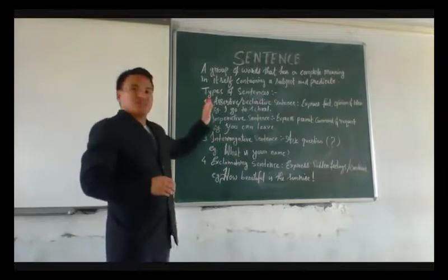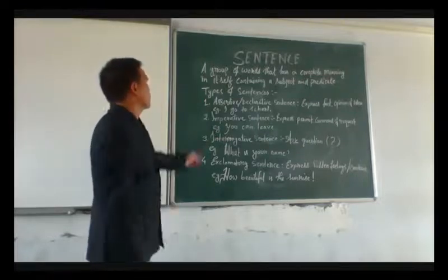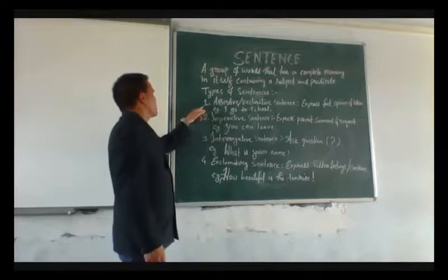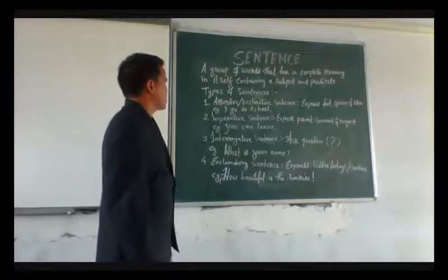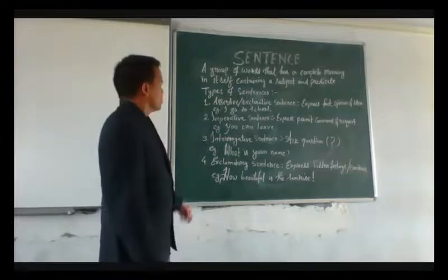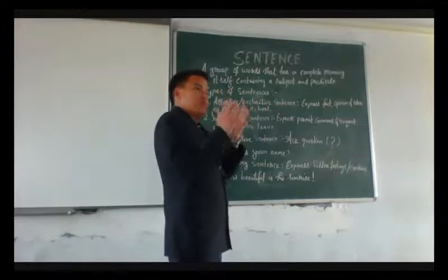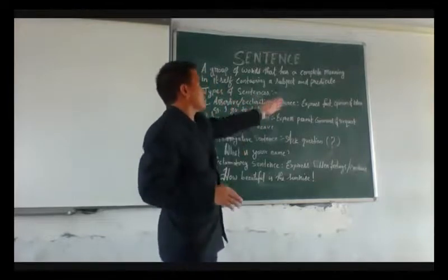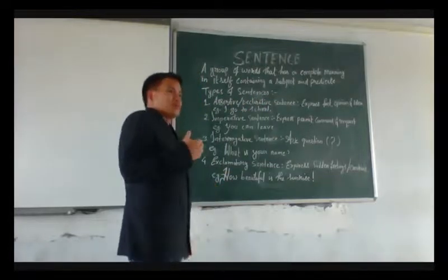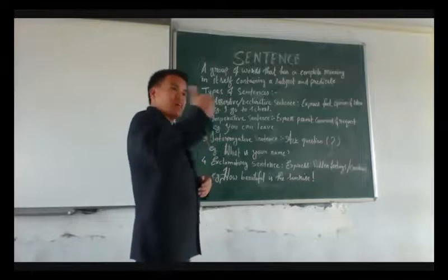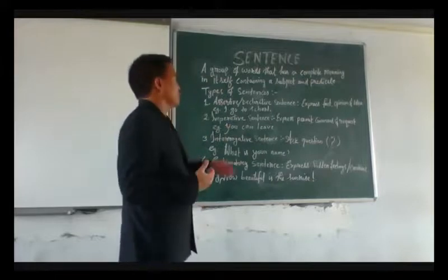This sentence can be categorized into four types. The first type of sentence is assertive or declarative sentence. The assertive or declarative sentence is a kind of sentence that expresses fact, opinion, or ideas of someone. That means the ideas of someone, or the fact that is going on, or the opinion of someone is expressed here.